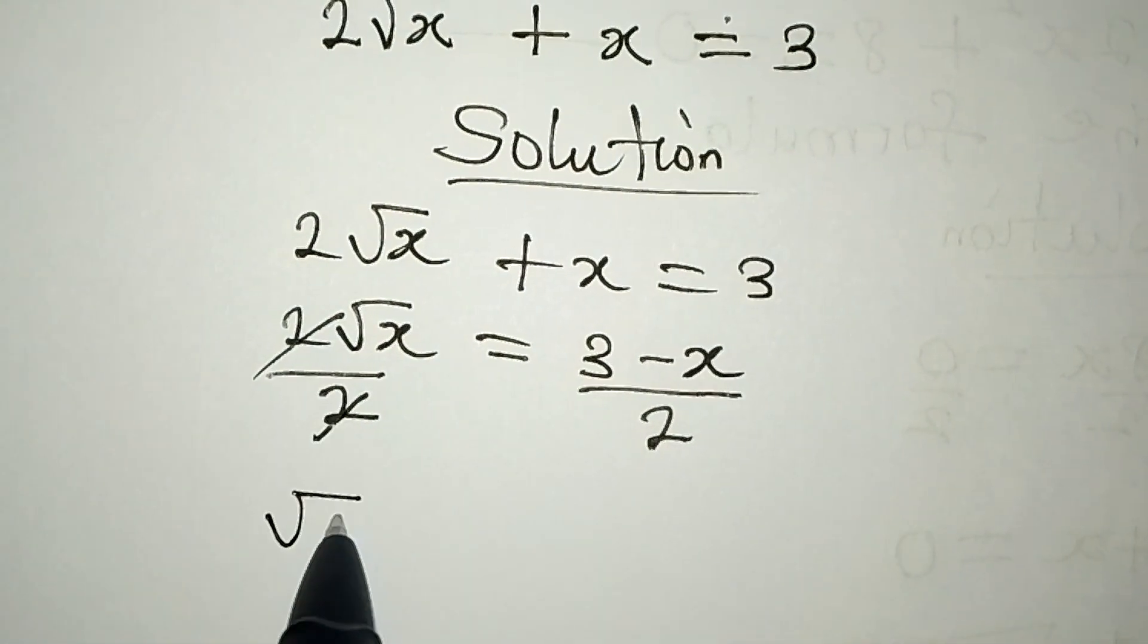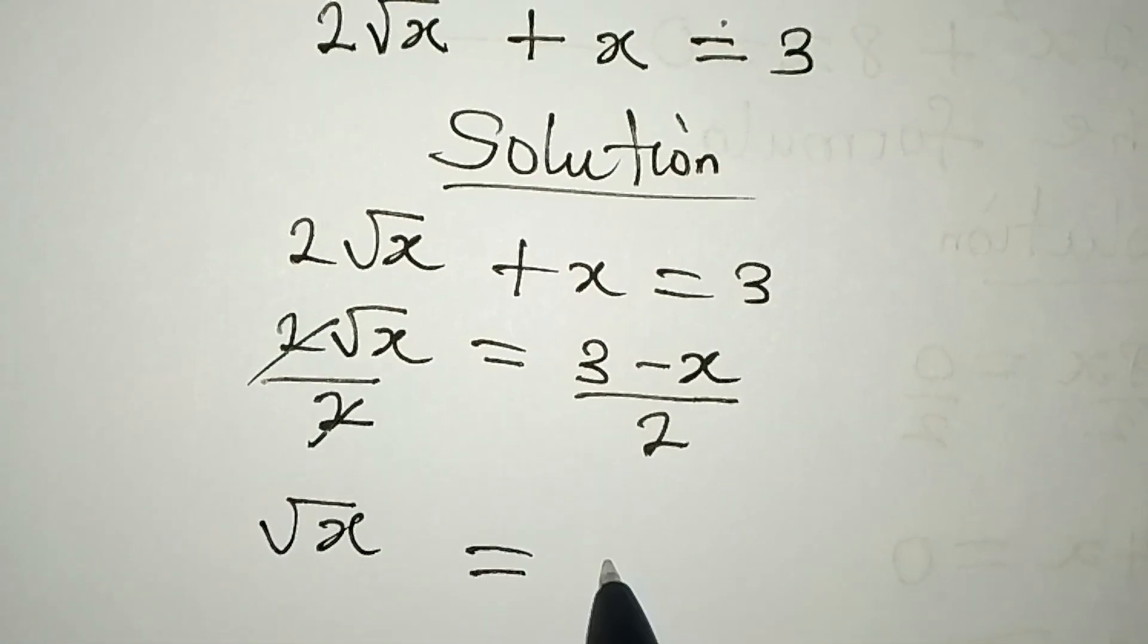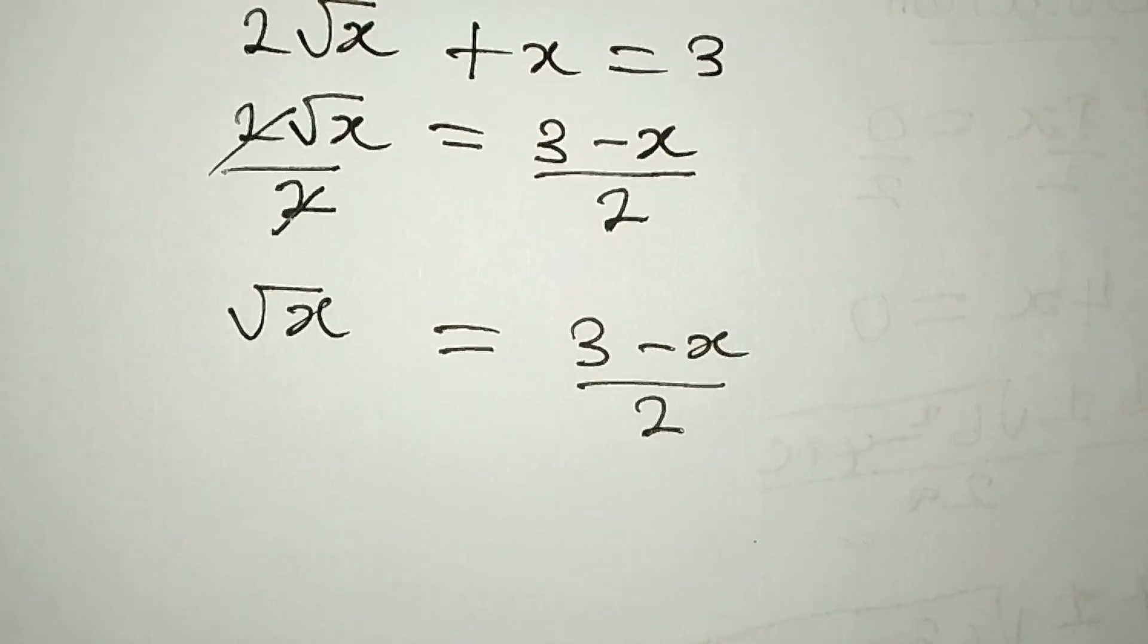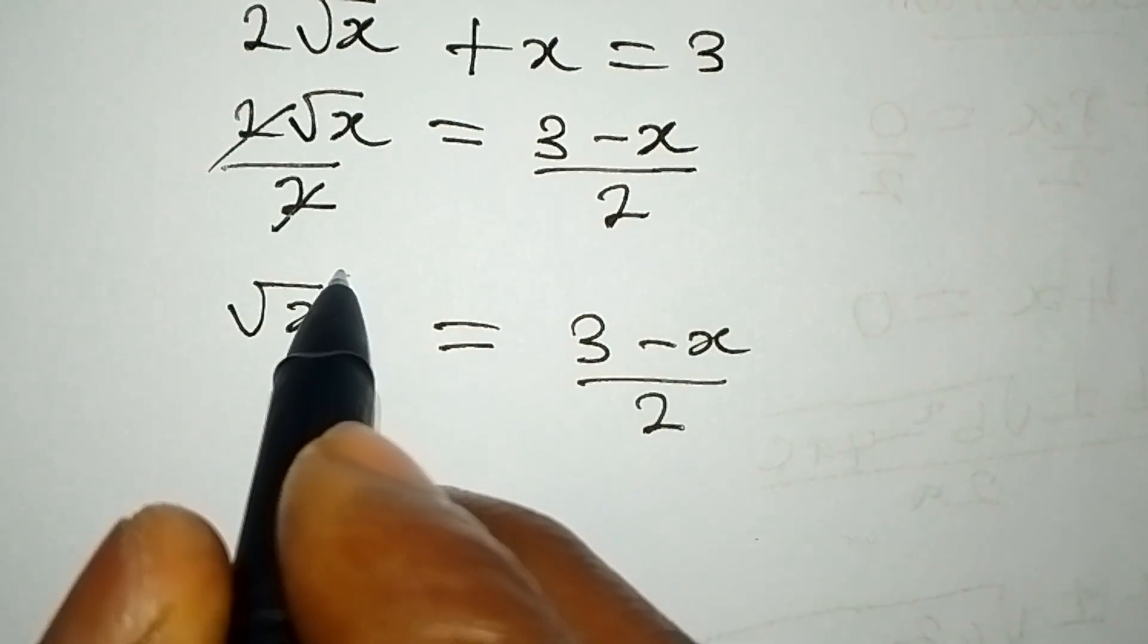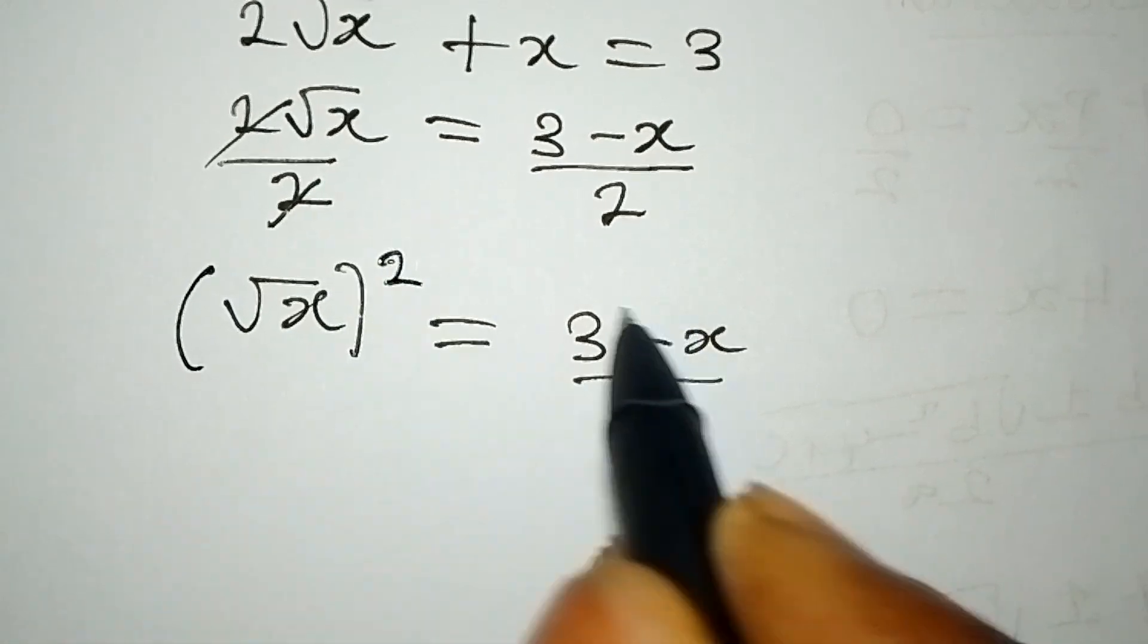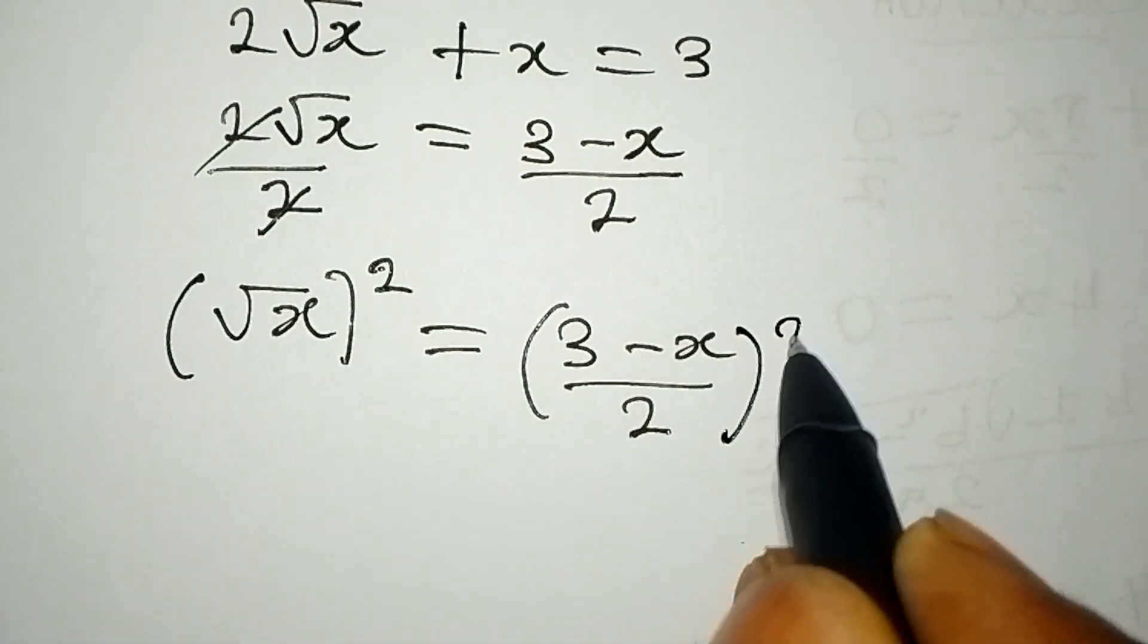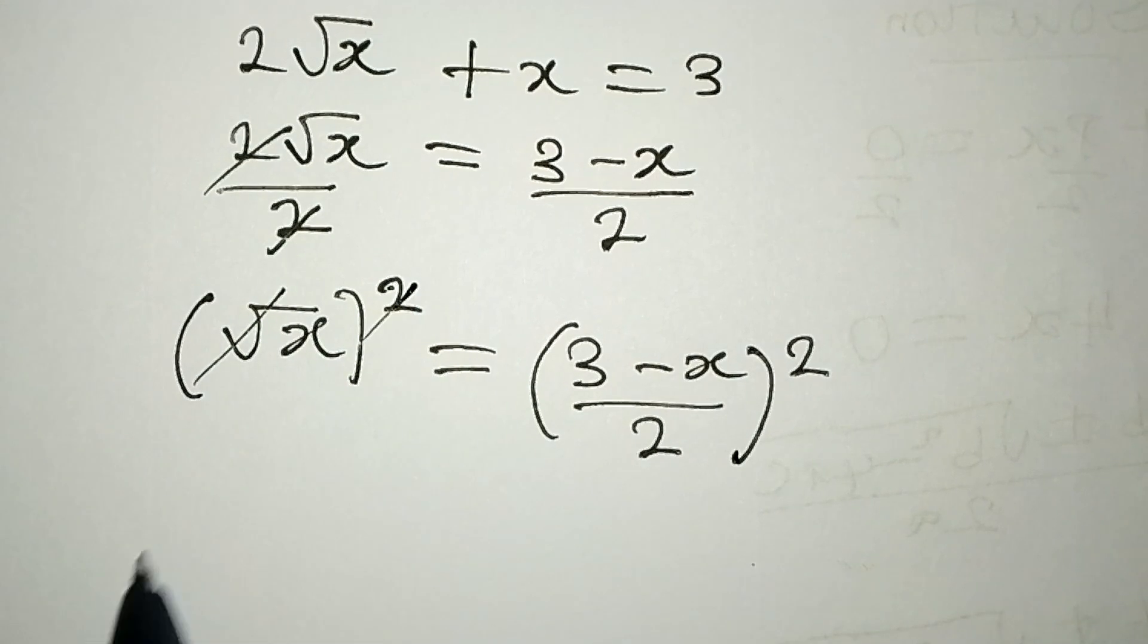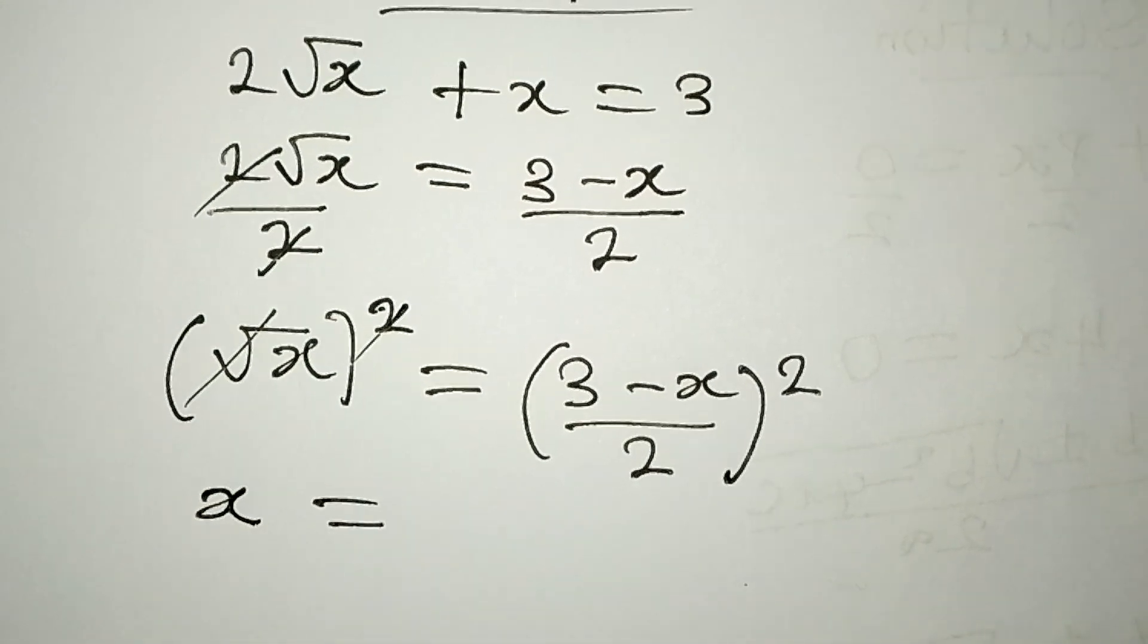Now √x = (3 - x)/2. At this point we can square both sides so that the square root sign can be eliminated. x equals